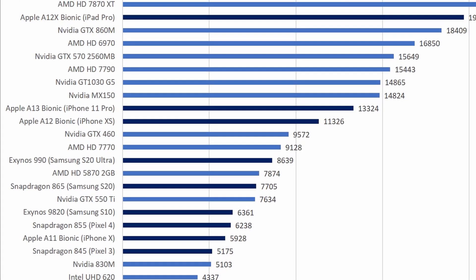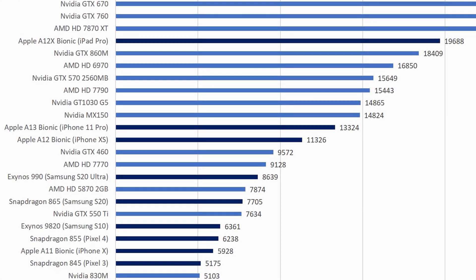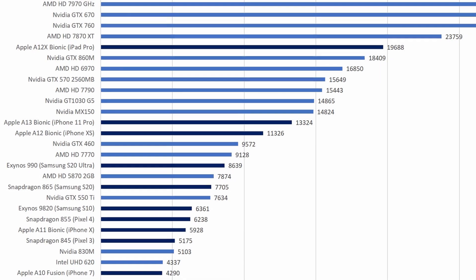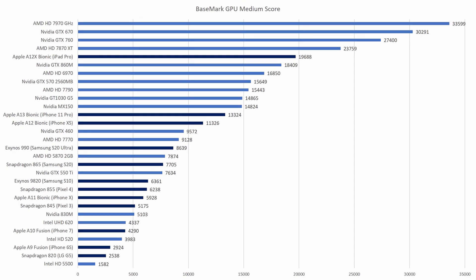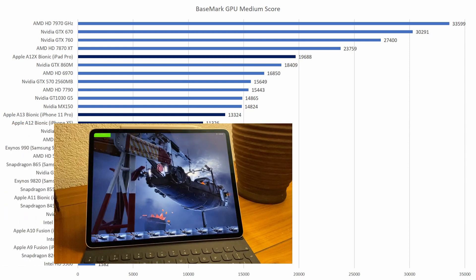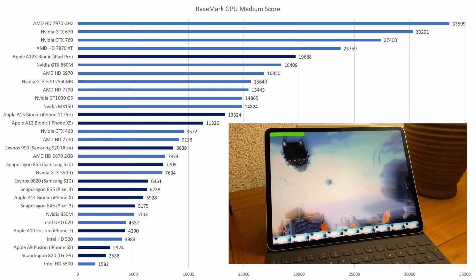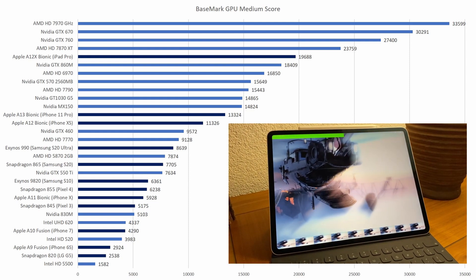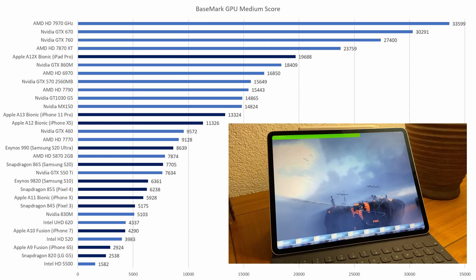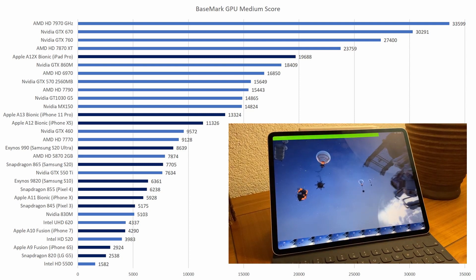Up next we have some older high-end GPUs like the Fermi GTX 570 and Terascale HD 6970, which are fairly close together at around 16,000 points, and both consume well over 200W. Now just slightly above those cards there is the A12X Bionic, found in the latest iPad Pro. And that is interesting for a few reasons — firstly, just how powerful it is, scoring over 47% above the A13 Bionic, and being very close with those older high-end GPUs.